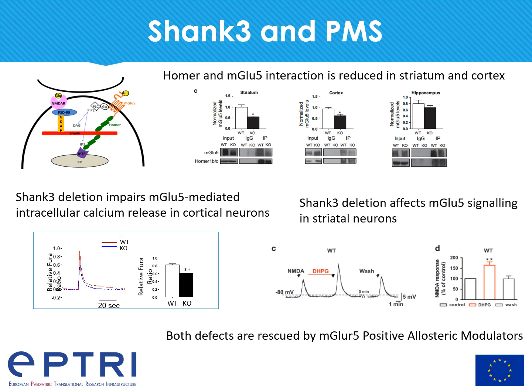Because we found a reduction in the formation of the mGLU5-HOMER complex also in striatal neurons, we analyzed the electrophysiological properties of striatal neurons. In wild-type neurons, co-treatment with NMDA and DHPG produced a significant increase in NMDA-mediated currents, but we were not able to see this increase in SHANK3 knockout neurons. This data suggests that SHANK3 deletion causes a significant reduction of mGLU5 expression and function at synapses.